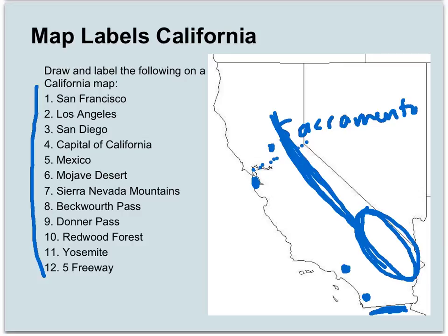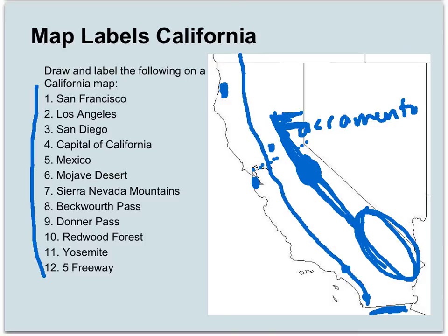The Mojave Desert is basically out in this area here. The Sierra Nevada mountains run all up and down the state. Beckwourth Pass is through here and here's Donner Pass going through the mountains. The redwood forest is located up in this area here. Yosemite is right about in there in the Sierra Nevada mountains. And the Five Freeway goes right about through there through the state. And so that's it — you can stop watching the video.